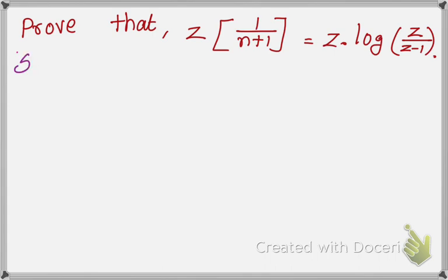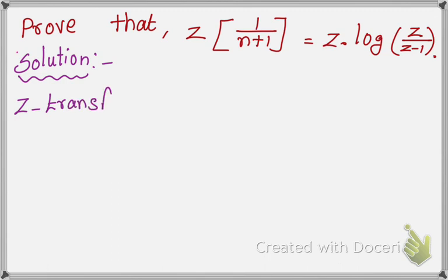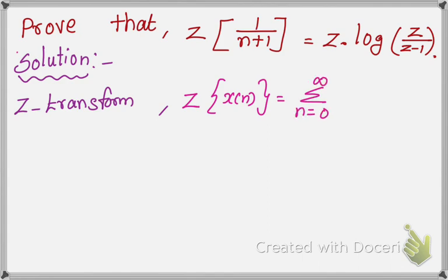First we write the definition. The formula of Z-transform is: Z of X(n) equals summation from n equal to 0 to infinity of X(n) times C to the power minus n. This is the formula for Z-transform.